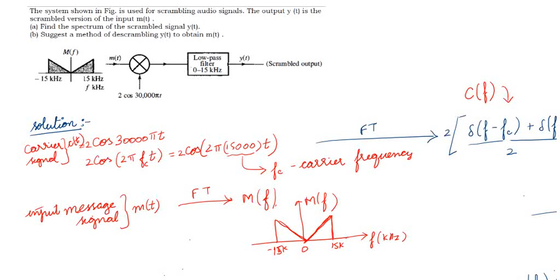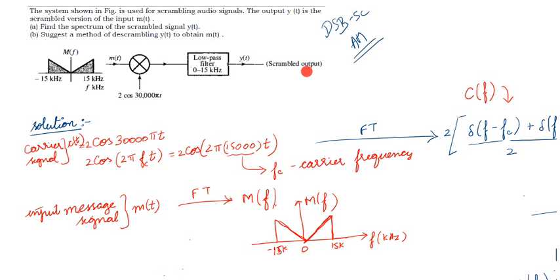Hi and hello everyone. In this video we are going to work out a practice problem based on modulation and demodulation. Particularly, this is the double sideband suppressed carrier type amplitude modulation. In this question, a message signal m(t) whose spectrum is m(f) is multiplied with a carrier signal, and the result is passed through a low pass filter. The output is y(t), which is called the scrambled output.